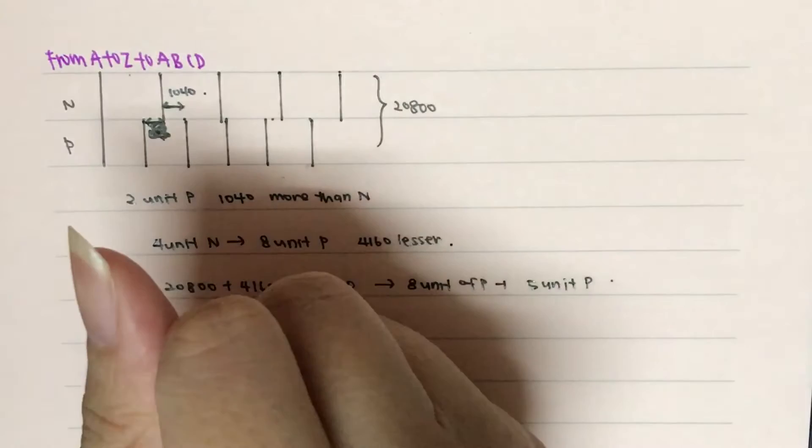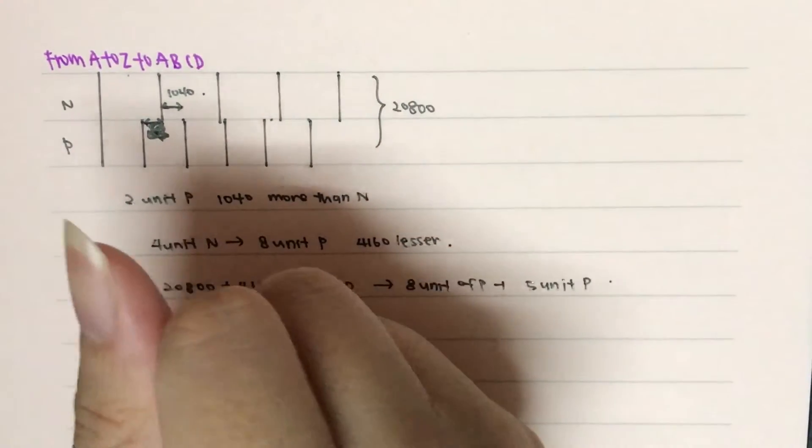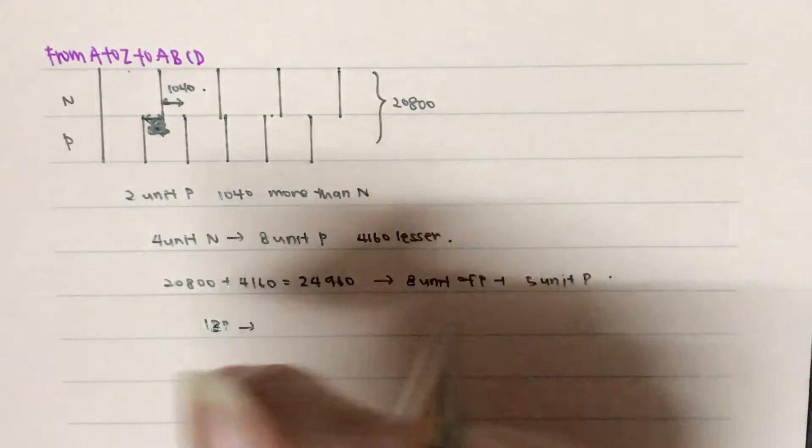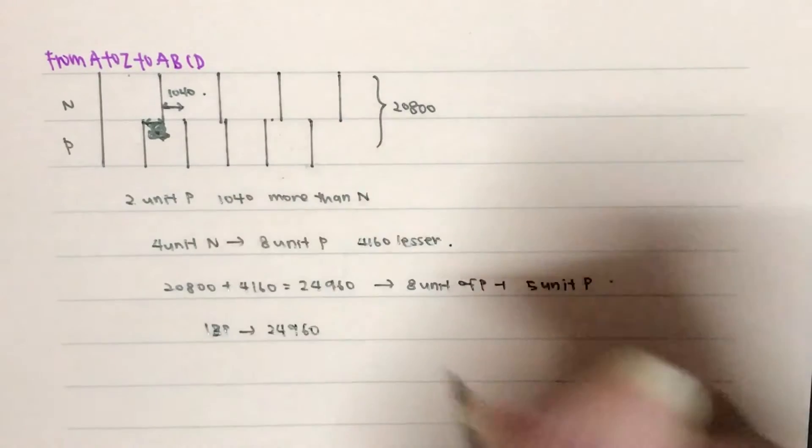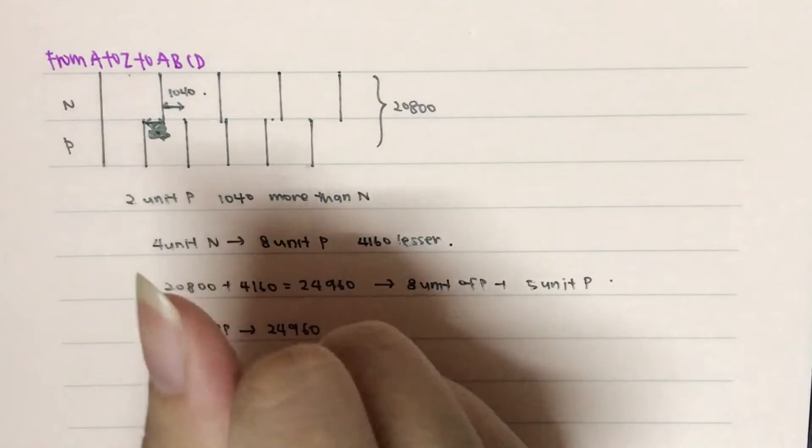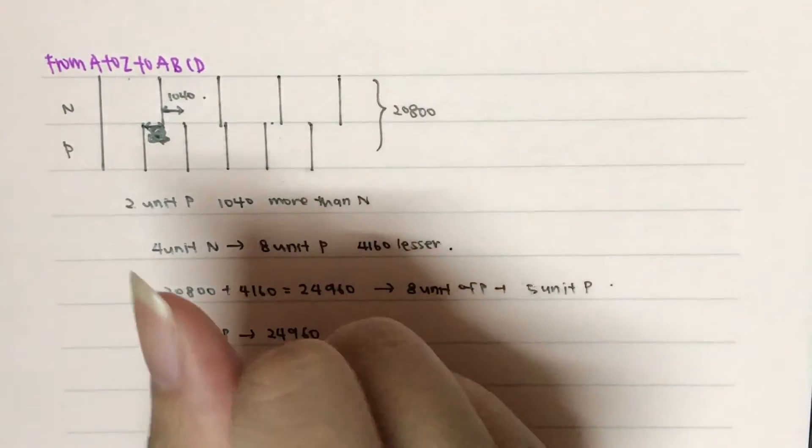So, therefore, we realize that eight P will actually end up to be 13 P's, because eight plus five is 13. 13 P's will actually be equals to 24,960. Therefore, P will actually be equals to five units.